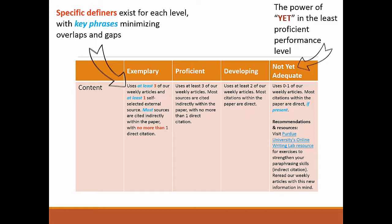We typically call this column "unacceptable," "inadequate," "incompetent," "poor," and the like. These all imply a permanent stamp of disapproval. What if we added "yet" to these?